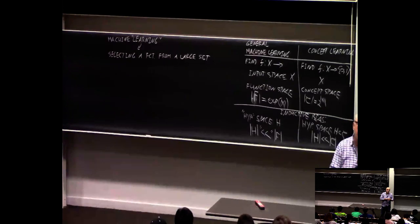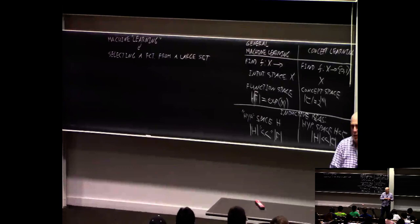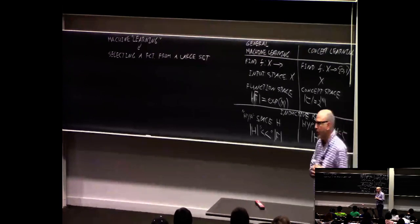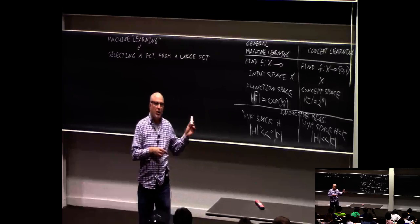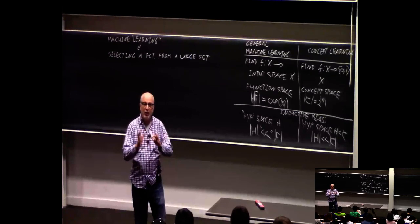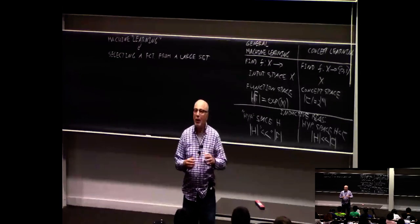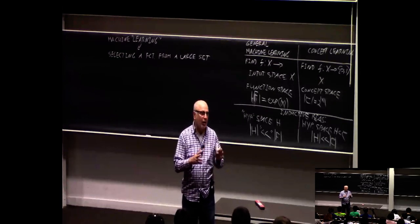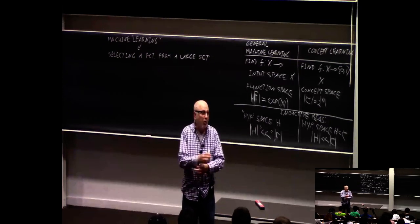Inductive bias is the assumptions you make to reduce your search space. I'm going to try to convince you that this is really the heart of what makes you succeed or not succeed in solving your machine learning problem. We're talking about it in the context of concept learning, which is learning a concept — namely a binary classifier. But the principle applies equally well, and even more importantly, to all other problems of machine learning.